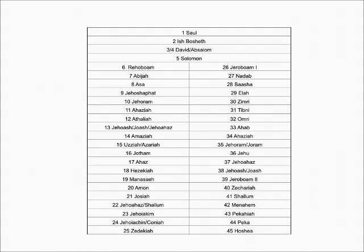Now they're not lined up according to the time periods in which they were serving — they are just in chronological order for the time they served. We know that the northern kingdom went into exile some 130 years before the southern kingdom, so they didn't end at the same time even though it looks like that on the chart. One other person who's often left off these charts is Tibni. He was serving at the same time as Omri — they overlapped a bit. But if you count all these people up, there are 45 of them.